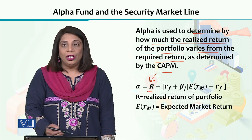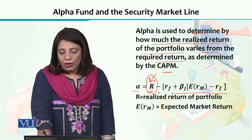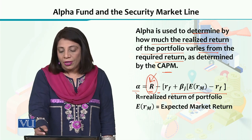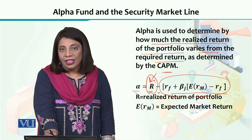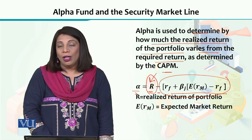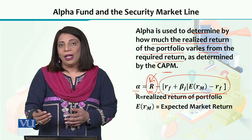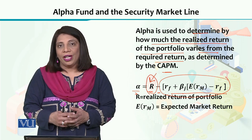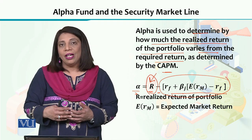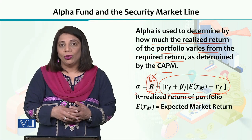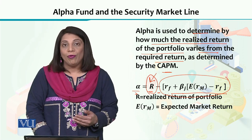We introduce realized return into the equation. If we take that equation and solve for alpha, then alpha equals the realized return minus the overall expected return — which is the risk-free return plus the risk premium multiplied by beta. Fund managers try to ensure that this difference — realized return minus expected return adjusted for risk — is always positive. If alpha is zero or negative, it shows no special effort. If alpha is positive, it indicates the fund is outperforming the overall market.